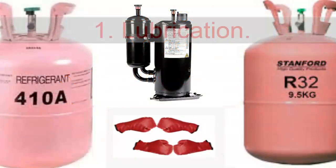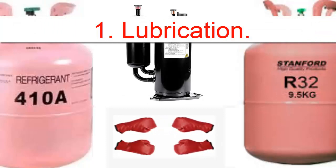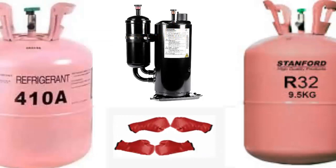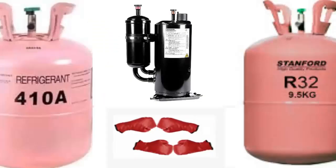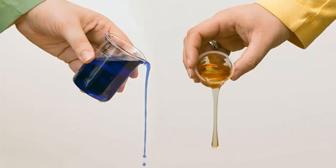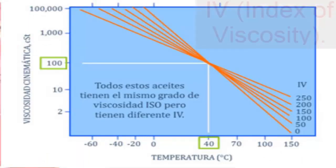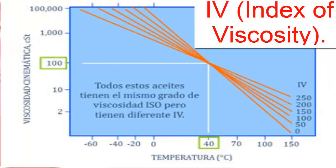1. Lubrication. Both R410A and R32 use PoE oil. However, due to its solubility, PoE oil with R32 tends to have lower viscosity compared to PoE oil with R410A. Therefore, replacing R410A with R32 can affect lubrication efficiency in certain cases. The viscosity of the oil in the compressor might be slightly higher than what is required for R32. The viscosity stability index of the oil used with R32 is usually higher than that of the oil needed for R410A. Remember that the viscosity index is a parameter indicating the oil's ability to maintain constant viscosity as temperature changes. The best viscosity indexes are greater than or equal to 100.